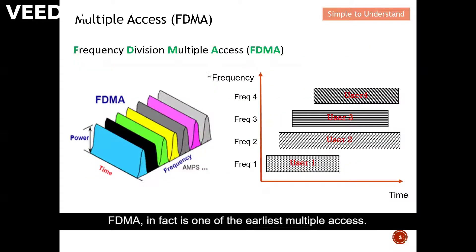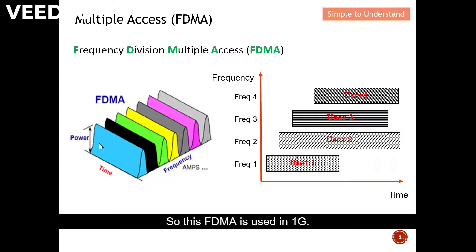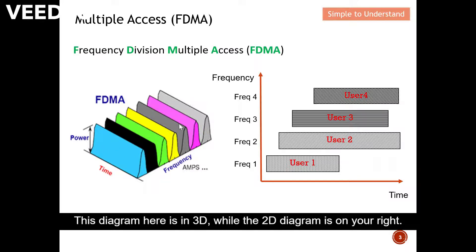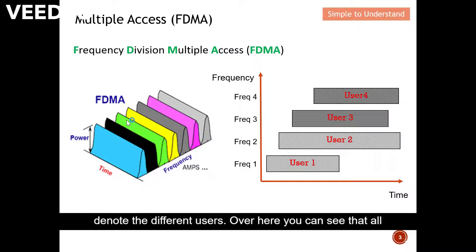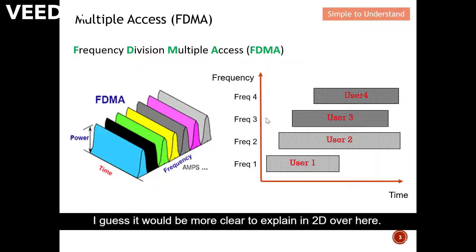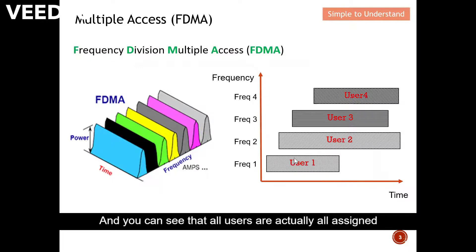FDMA is one of the earliest multiple-access techniques and was used in 1G. This diagram here is in 3D while the 2D diagram is on the right. From the 3D diagram, the different colors denote different users. From the 2D time-versus-frequency diagram, you can see that all users are each assigned a unique frequency.